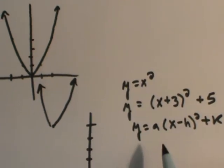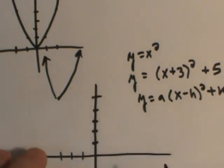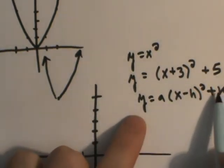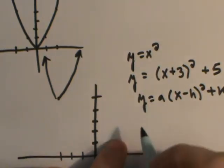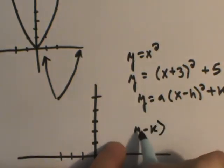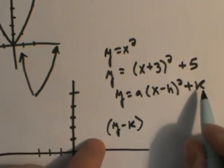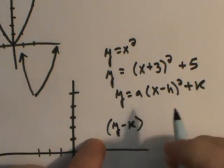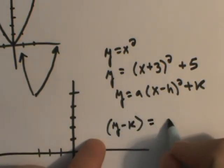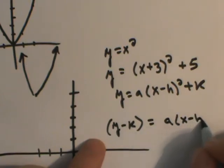What I want to go off of this is show it as a phase shift idea. If I bring that k over, it could actually be written as y minus k, because I'm bringing the k from this formula here, bring it over, equals a times x minus h quantity squared.